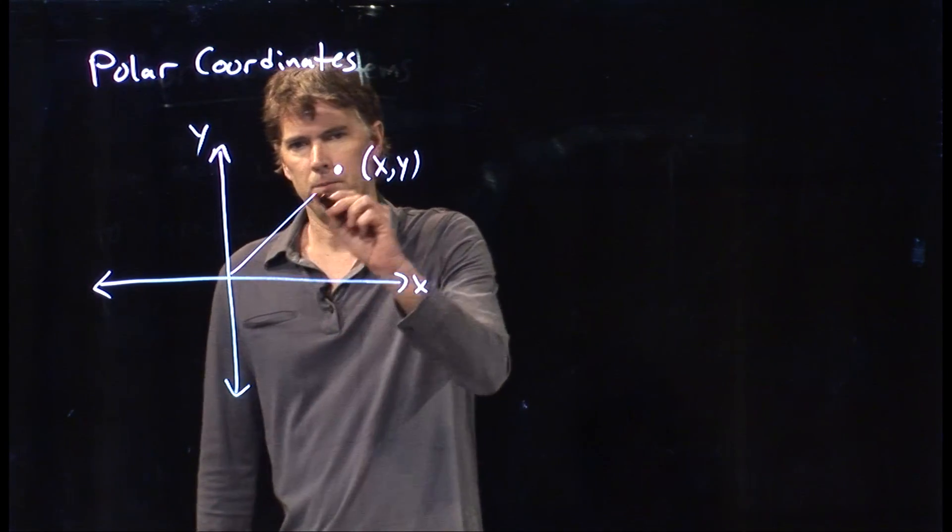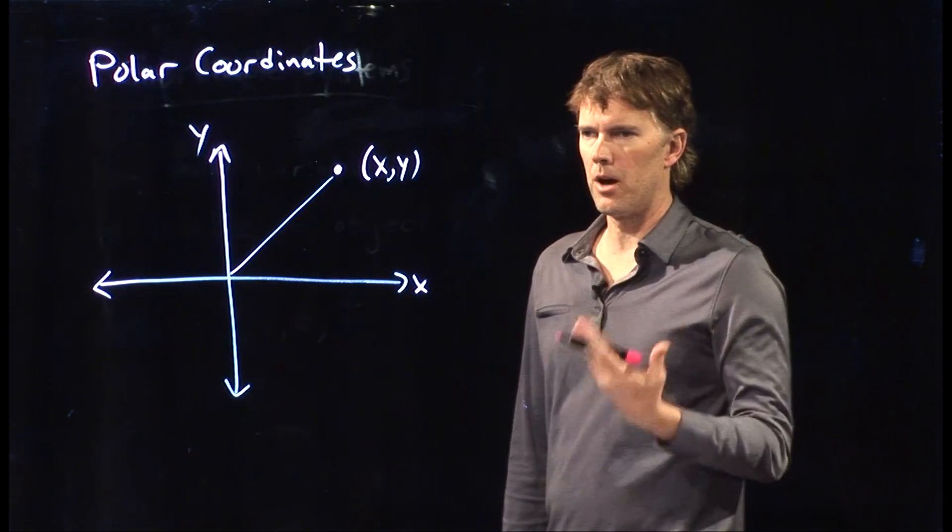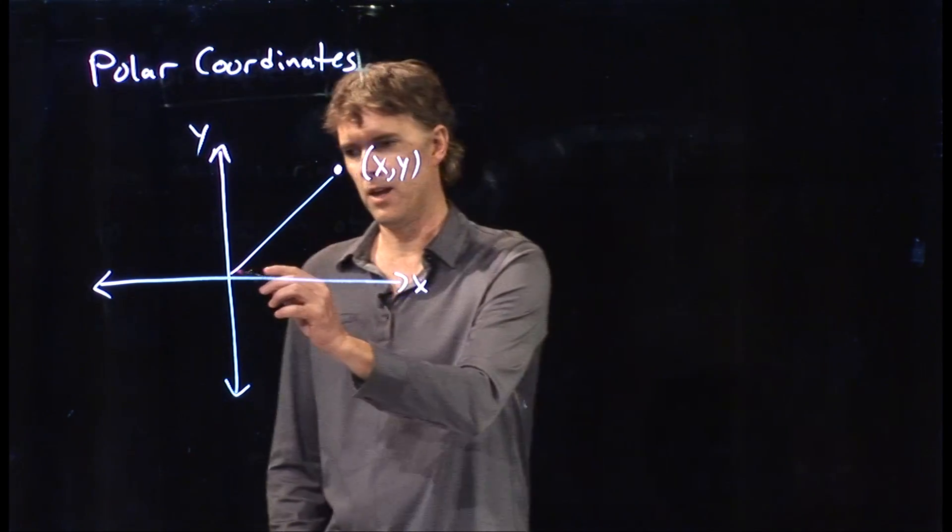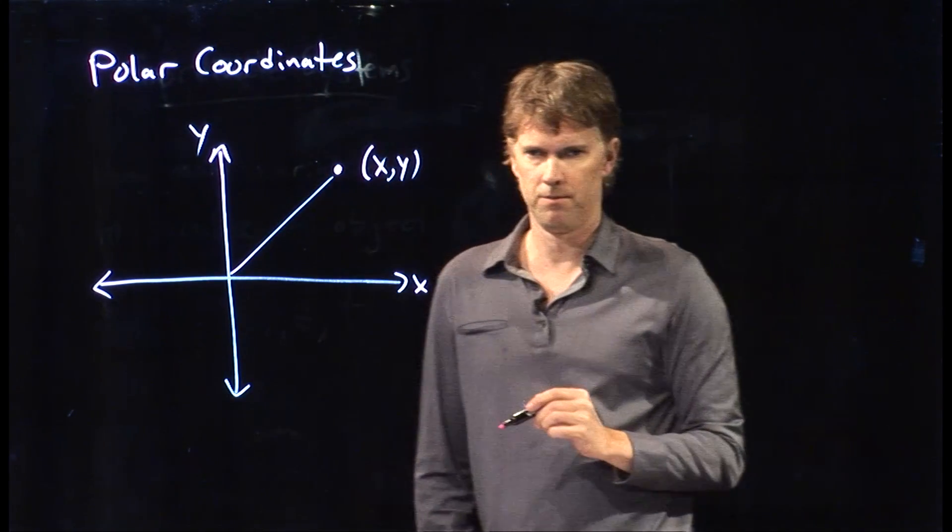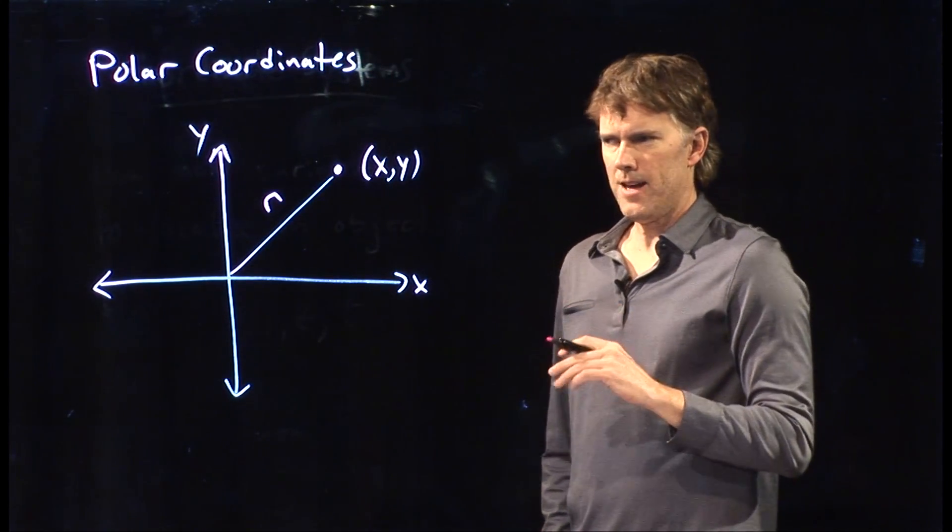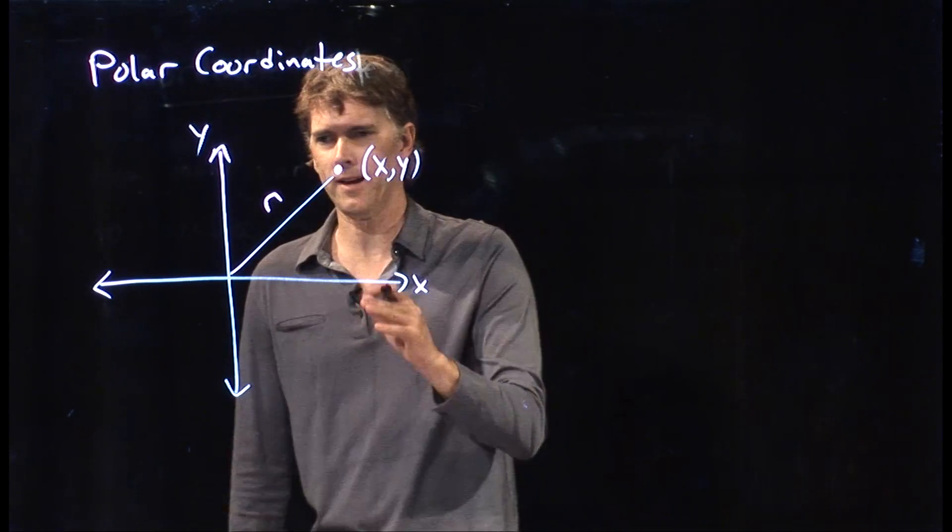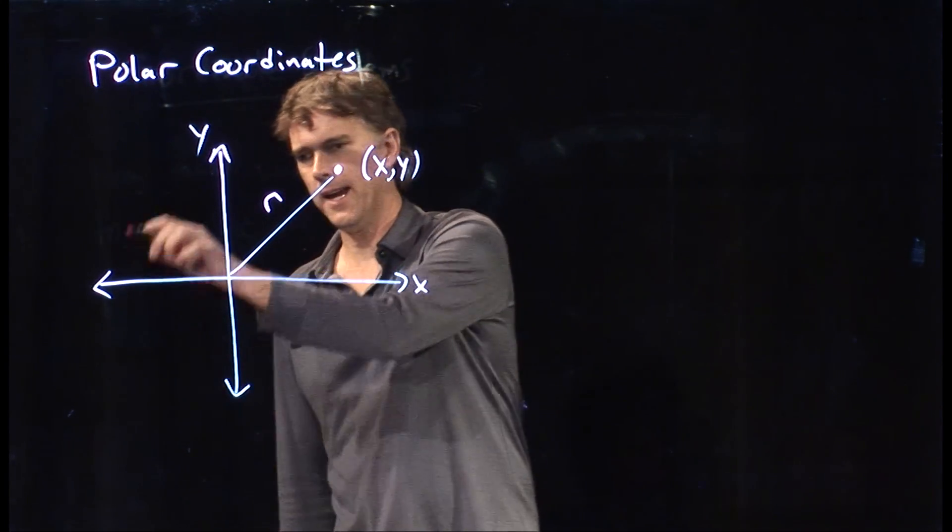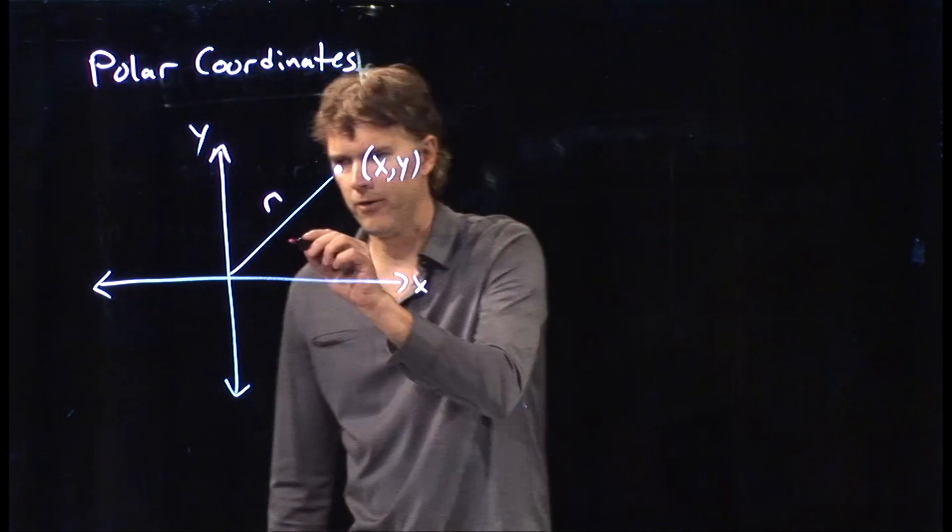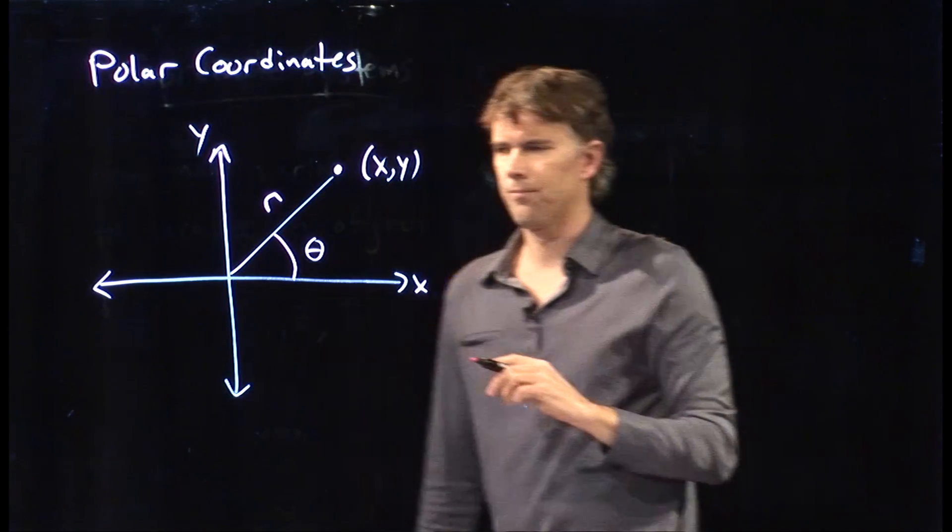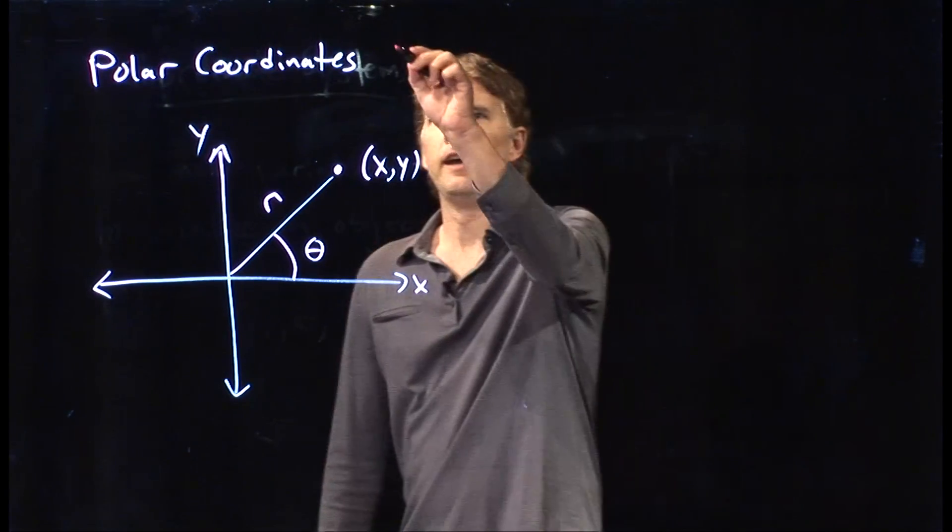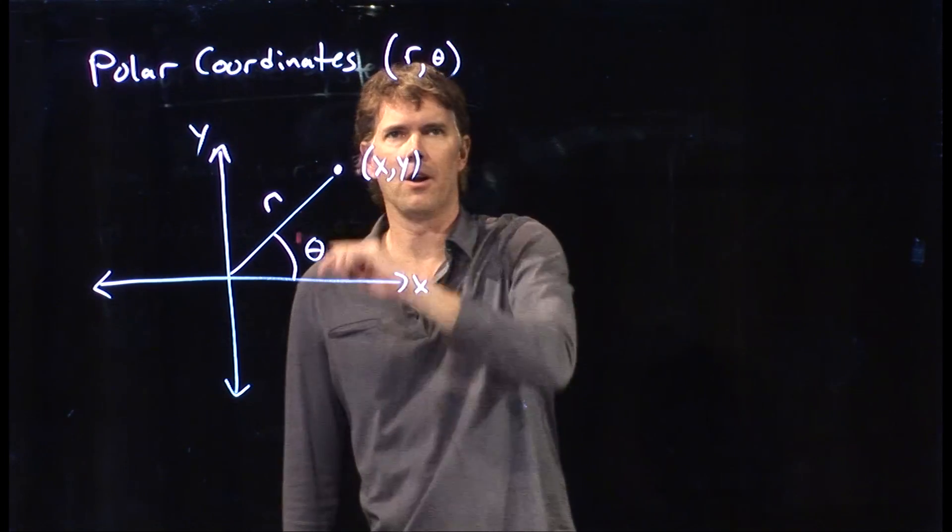But now I want to define that in terms of some other variables. What could I use? Well, one possibility is how far are you from the origin? And that we typically use lowercase r. And that maybe is enough, but not quite, right? Because if I just told you r, you could be anywhere on a circle of that radius r. So we need one more variable. And the variable that we're going to use is theta. What's the orientation of that line with respect to the x axis? And so these are called polar coordinates, r and theta.